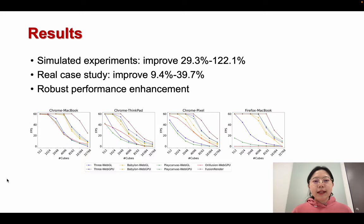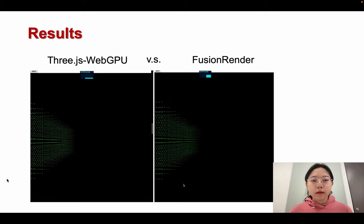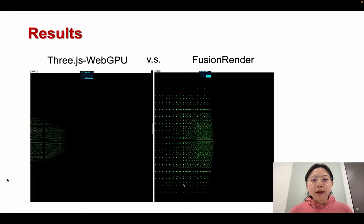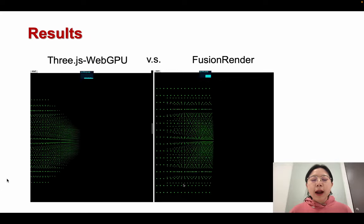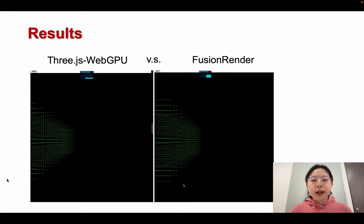In simulated experiments involving the rendering of multiple objects, Fusion Render demonstrates a median rendering performance improvement of 29% to 122%. In real cases with more complex features, performance improvement ranges from 9% to 39%. We present a demo comparing Three.js WebGPU and Fusion Render, and it can be observed that Fusion Render achieves higher FPS and smoother rendering.